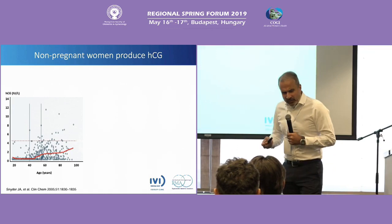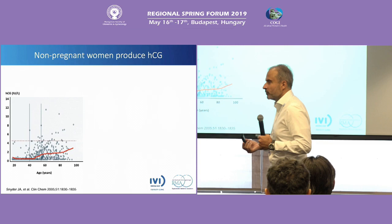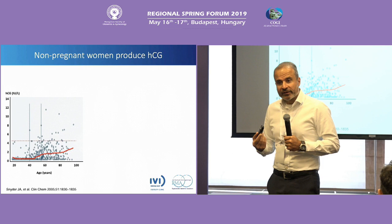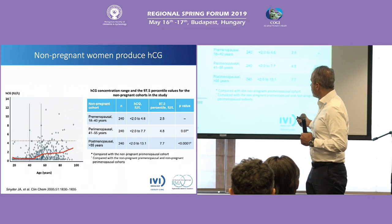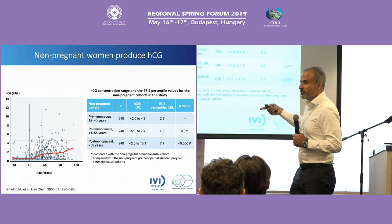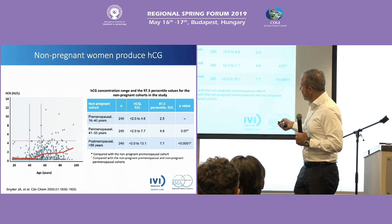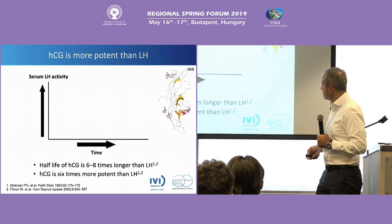You might ask: hCG is a pregnancy hormone, so non-pregnant women normally do not have any hCG. Wrong — because even non-pregnant women do have hCG. The older women become, the higher the hCG value. Also, men do have hCG, by the way. So the older women get, the more hCG is present.